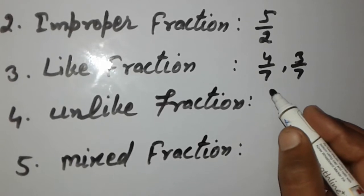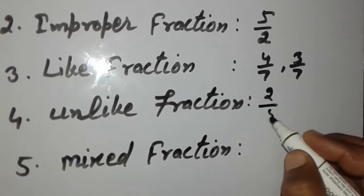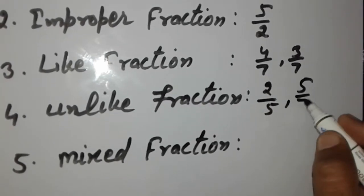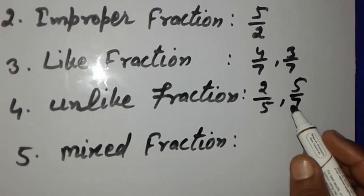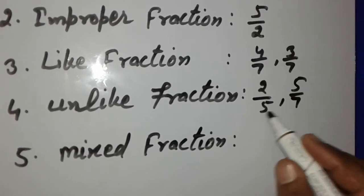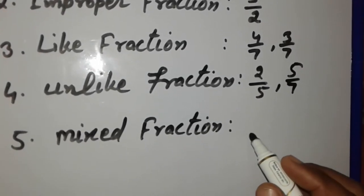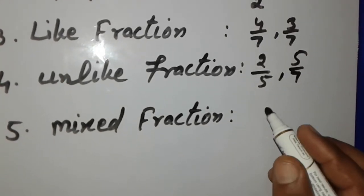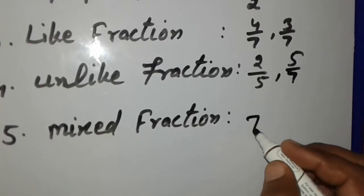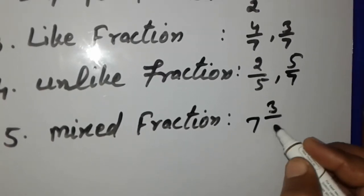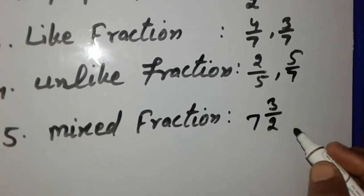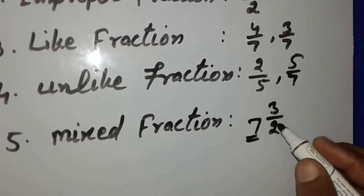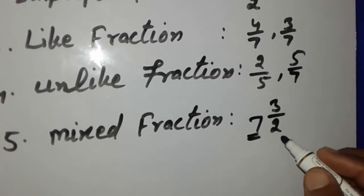Unlike fractions: for example, two upon five and five upon seven are unlike fractions because their denominators are different. Mixed fraction is a joint form of a whole and a part of a fraction. For example, seven and three upon two is a mixed fraction — seven is the whole and three upon two is the fractional part.